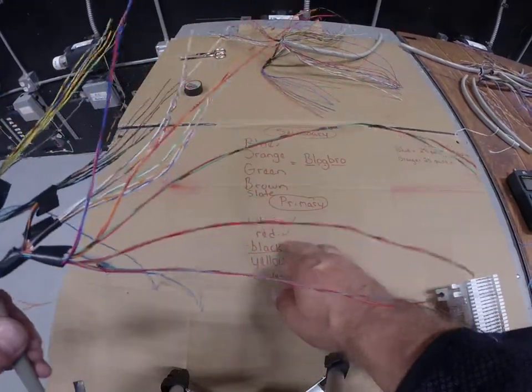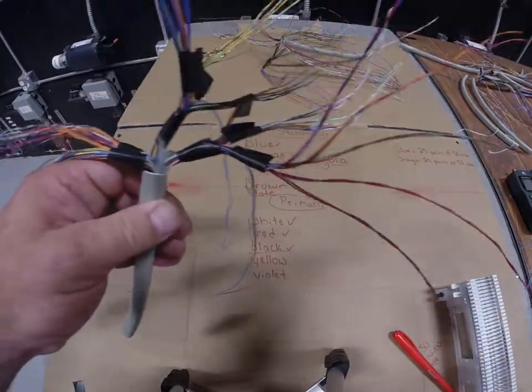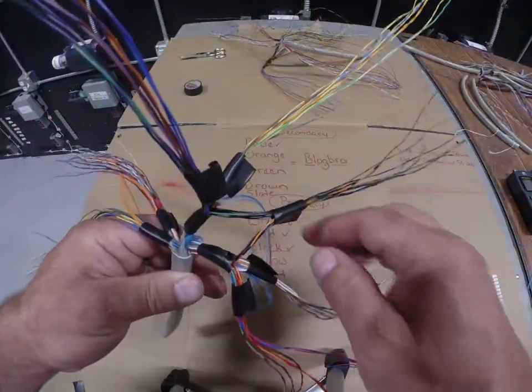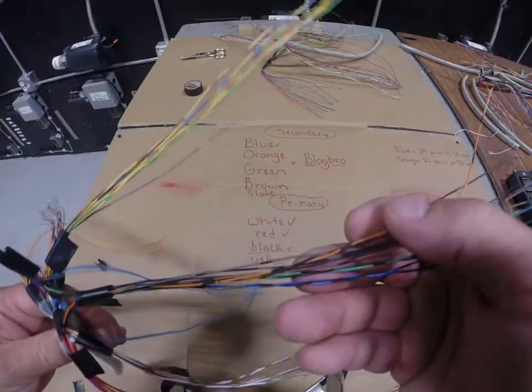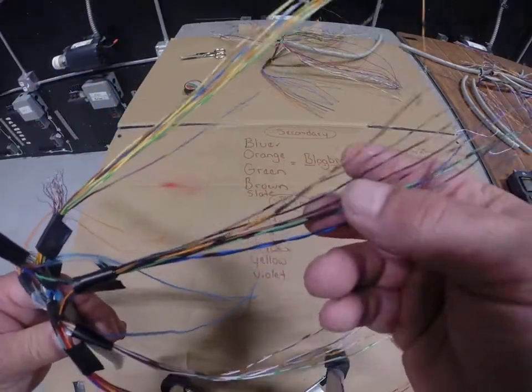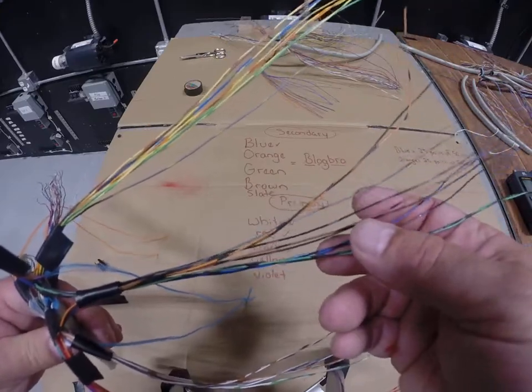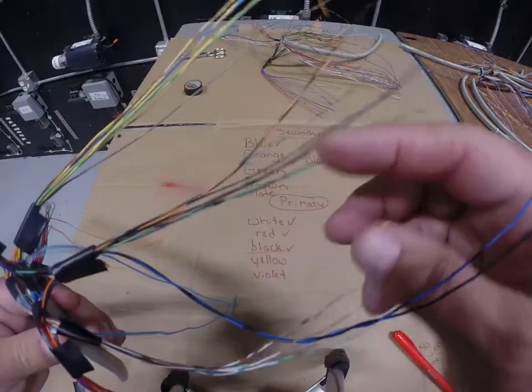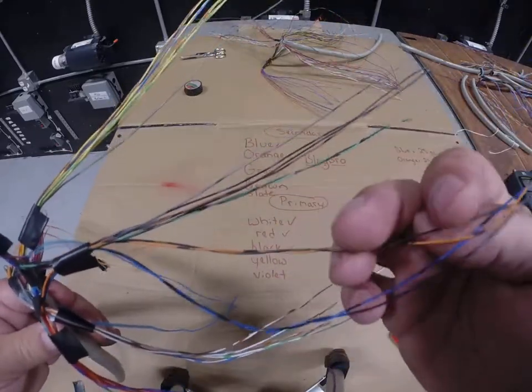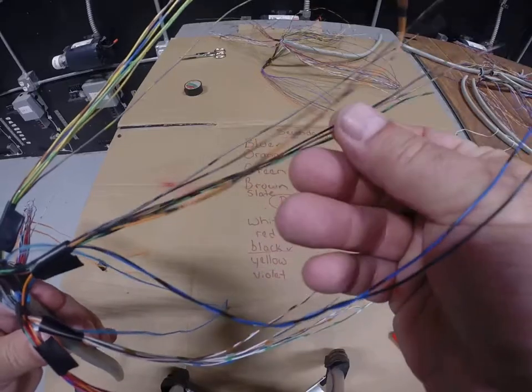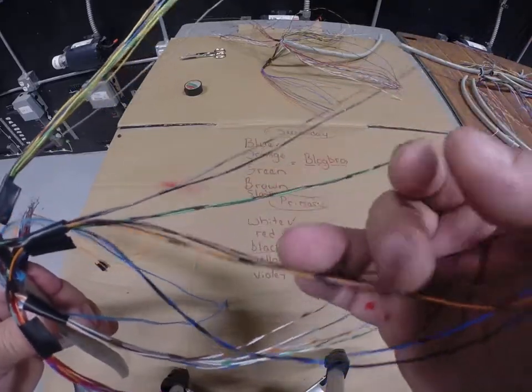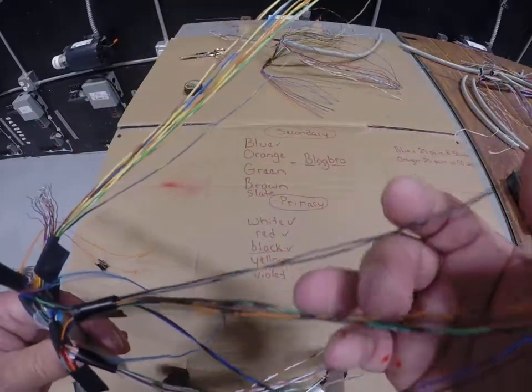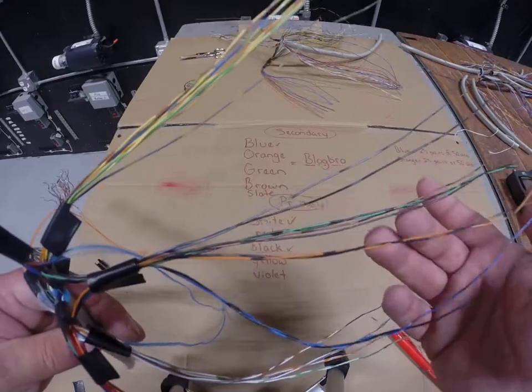So we've already covered the white and the red. Now we've got to look for the black set. Notice as I go into two separate blue binders, you'll see that this is my black. And if I go through all of these, of course, I've got black blue. You can see it here. I've got black orange. I've got black brown. Of course, I've got black green. And I've got black slate. So we've got the blue, orange, green, brown, slate again.